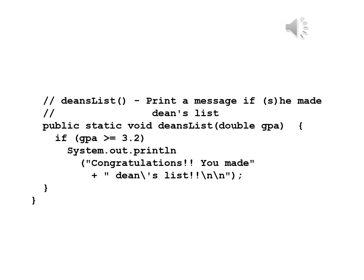We begin the deansList method by writing a comment: print a message if he or she made Dean's List. We begin the method with: public static void deansList(double gpa) open brace. We need a parameter here because this is how the main program gives this method the information it needs. Inside the method: if gpa >= 3.2, System.out.println("Congratulations, you made Dean's List!"). Then a close brace for the method and a close brace for the class — the entire program.